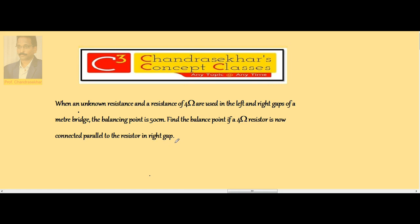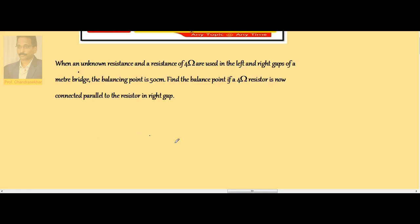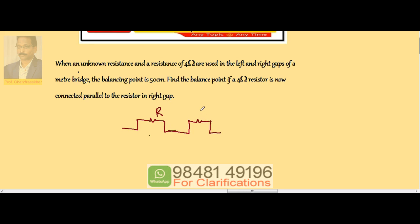Here, one unknown resistor and a 4 ohm resistor are connected in the left and right gaps. Let's say this is R and this is 4 ohm. Left gap is unknown resistance, right gap is 4, and the balancing point is 50.